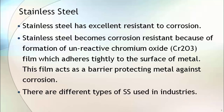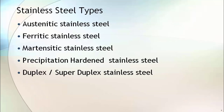There are different types of stainless steel used in industry. Based on the microstructure, stainless steel can be classified as austenitic stainless steel, ferritic stainless steel, martensitic stainless steel, precipitation hardened stainless steel, and duplex and superduplex stainless steel.